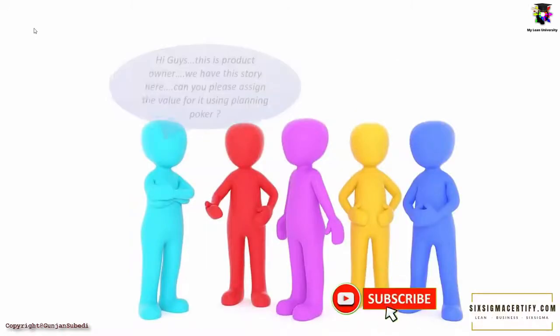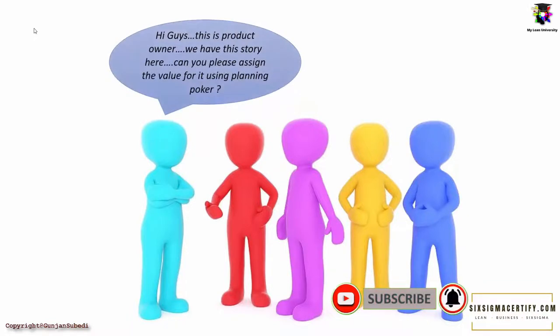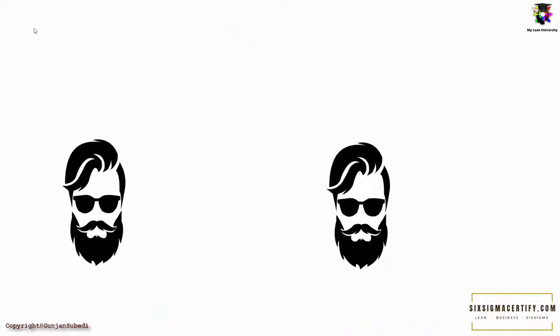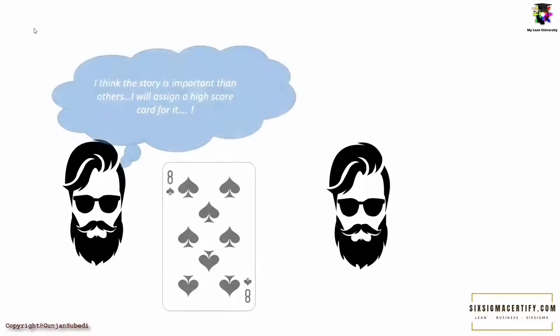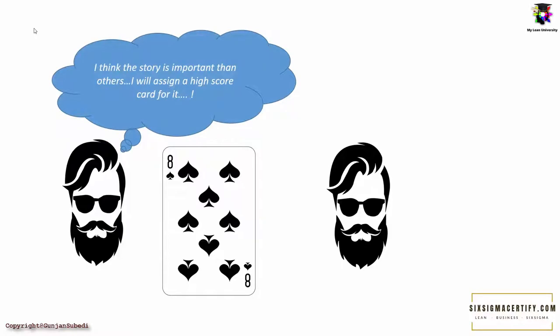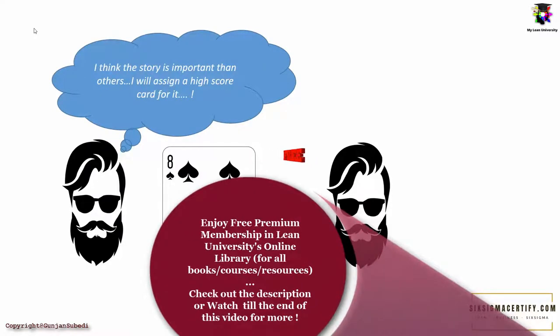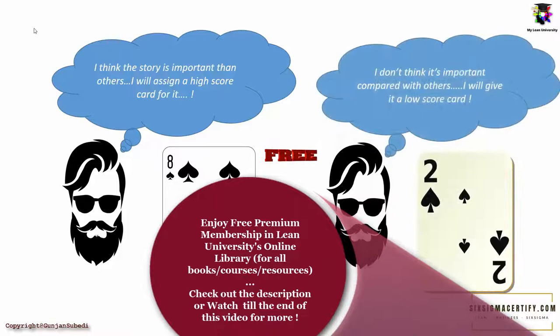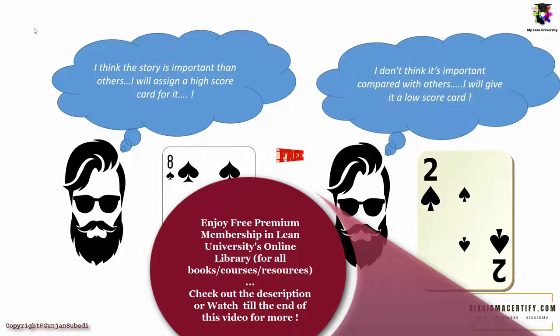The product owner comes and reads the story and there is a short discussion about the story in the team. Each estimator then assigns the weight or votes the story with his preferred card. If he or she thinks that the story is important relative to others, then he may select the card of higher number. And if he thinks that the story is relatively less important than other stories, he will assign a lower scorecard to that particular story.